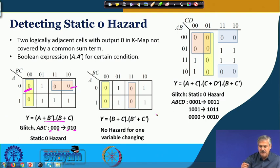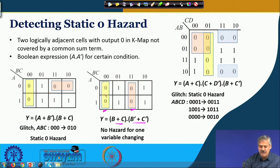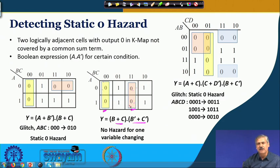Looking at a similar truth table in relation to the Static-1 Hazard discussion — there we grouped the 1s, now we group the 0s. This is one group generating b-plus-c, and the other group generating b-prime-plus-c-prime, ANDed together for the POS representation. The logically adjacent 0s in one group are under a common sum term, and the other 0s are not logically adjacent, so they need not be covered by a common sum term. Therefore, there is no Static-0 Hazard here.